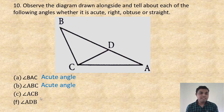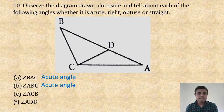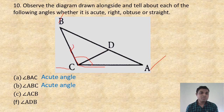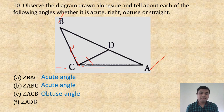Angle ACB: A and C, B are two rays. This angle is more than 90 degrees but less than 180 degrees, so it is an obtuse angle. Write: obtuse angle.